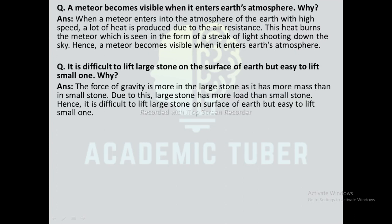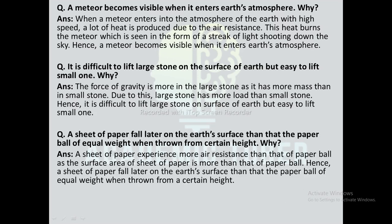Why is it difficult to lift a large stone but easy to lift a small one on Earth's surface? The force of gravity is greater on a large stone because it has more mass, so it has more weight than a small stone — hence it is difficult to lift. Why does a sheet of paper fall later than a paper ball of equal weight thrown from the same height? A sheet of paper experiences more air resistance than a paper ball because its surface area is greater, so it falls more slowly.